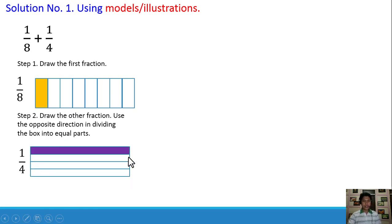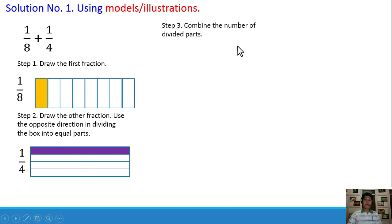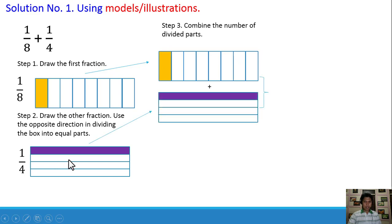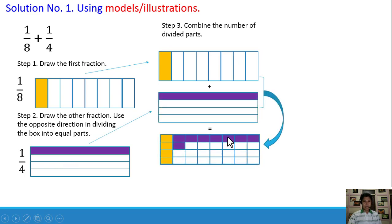This time, we are going to use horizontal lines in dividing it into 4 equal parts because we used vertical lines here. Next, combine the number of divided parts. There are 8 divided parts and there are 4 equally divided parts. So if we combine them together, we count 8 parts times 4 parts — 8 times 4 is 32. There are 32 equal parts.